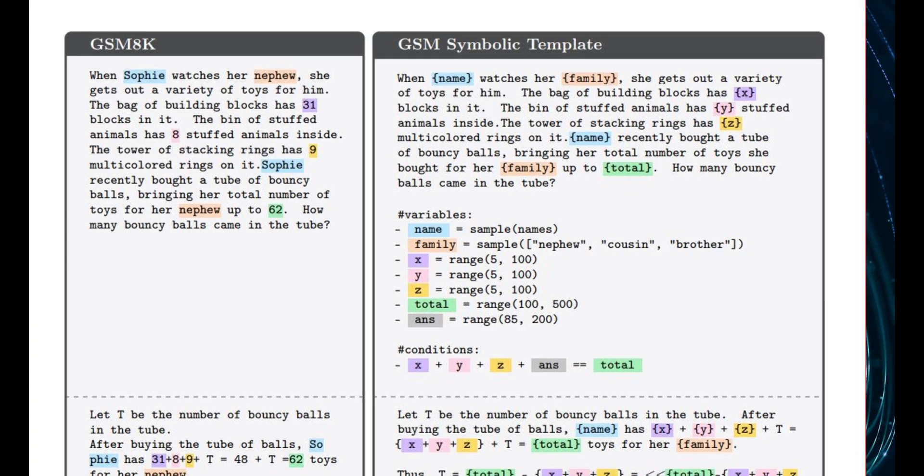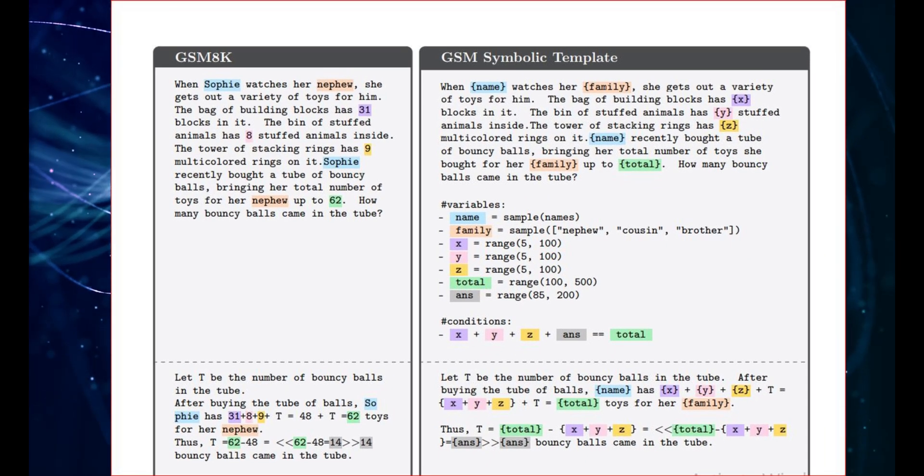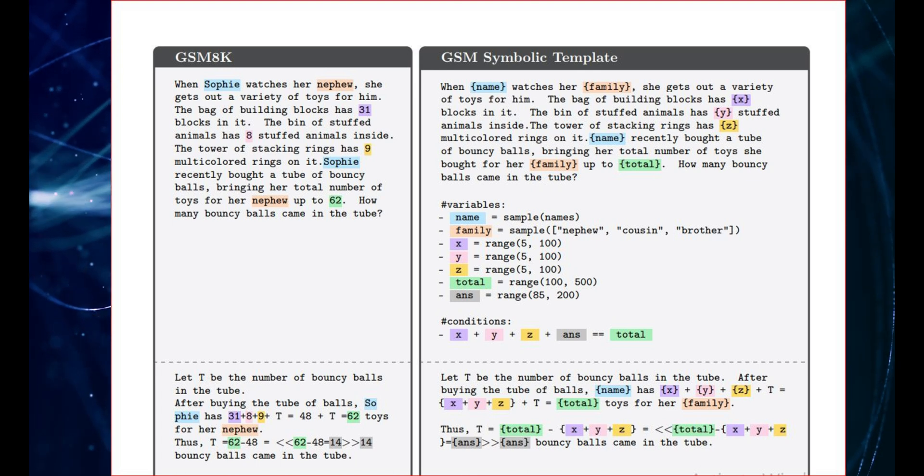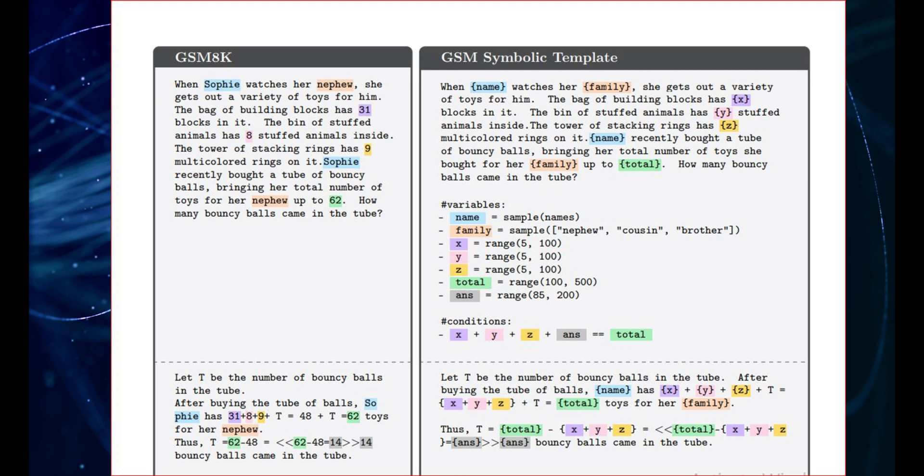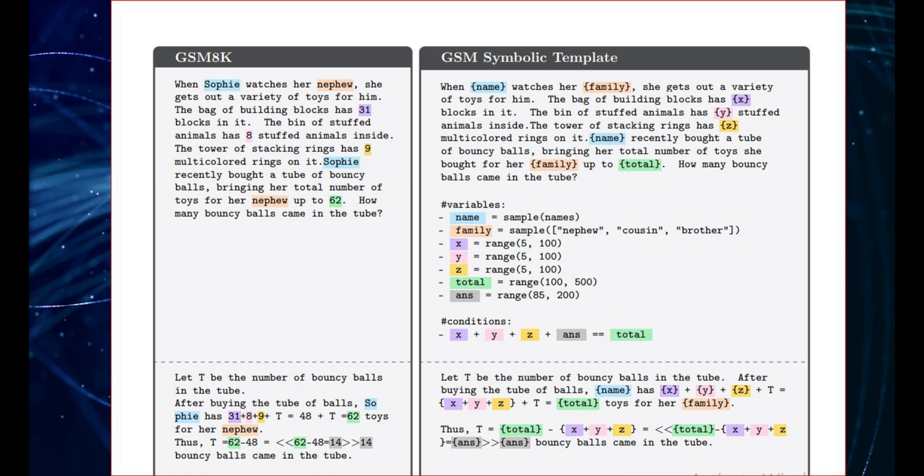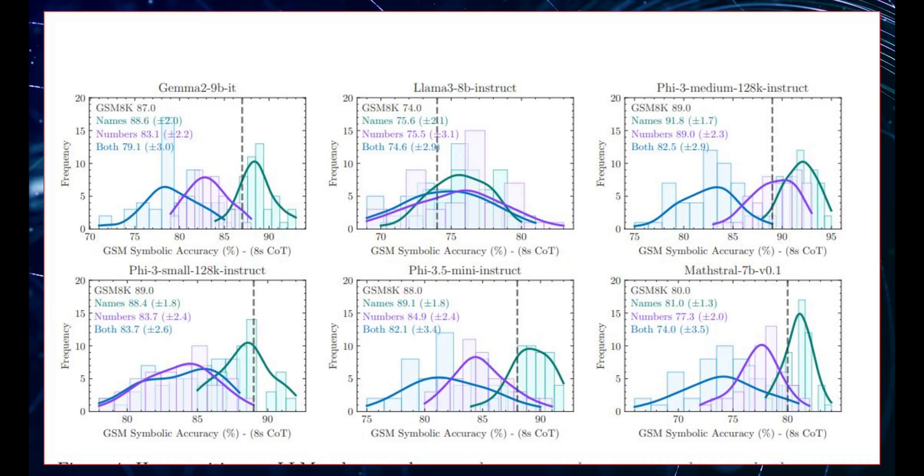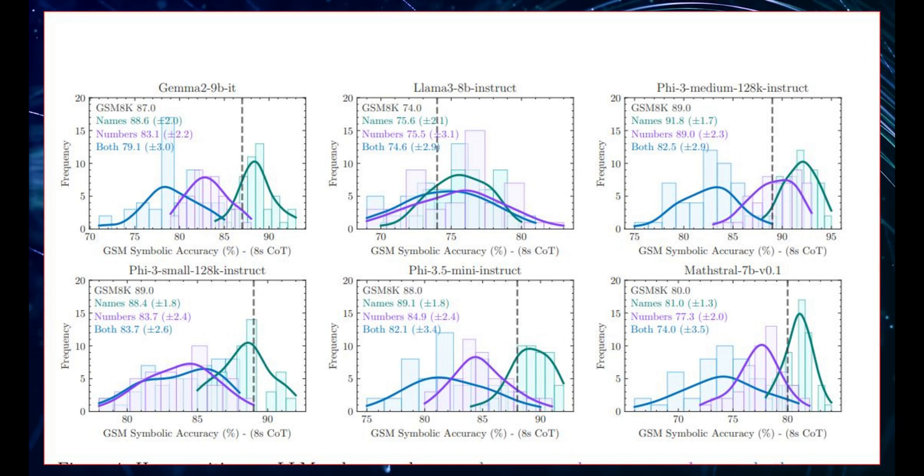But the crazy thing about this was that when they changed the names and the values, there's a huge discrepancy in the results. A massive difference between what the models claim to have scored for various research labs, versus what they actually tested and got on the GSM symbolic test. They say here, current accuracies on the GSM 8K are not reliable. We observe a large performance variation. For example, Llama 88B scores anywhere between 70% to 80%, 53 scores between 75% and 90% and so on. And for most models, the average performance on the GSM symbolic, which is just a variation of a test they already took, with different names and different values, is lower than the GSM 8K.